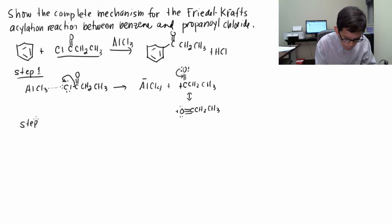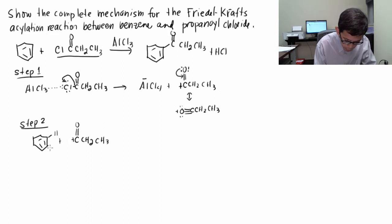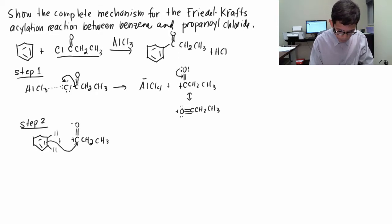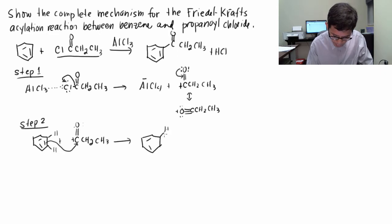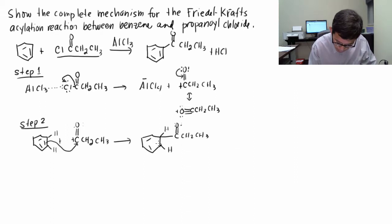In step two, benzene enters the picture. Benzene reacts with the electrophile — C double bond O, CH2, CH3 — where the plus charge is at that carbon. The pi bond of benzene grabs the carbon bearing the plus charge. Now you have a covalent bond to that carbon, the C double bond O with two lone pairs on the oxygen, CH2, CH3. The plus charge is now at the carbon on the ring.